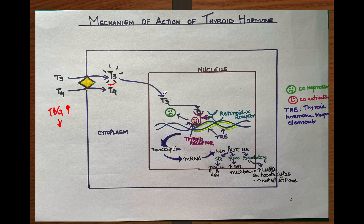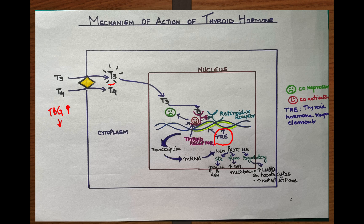T3 goes into the nucleus, and the receptor for T3 — the thyroid receptor — is present in the nucleus itself. This receptor is present on special areas of the gene called the TRE, which stands for thyroid hormone response element. When the receptor is in its inactive form, it is usually bound to corepressors, which are responsible for keeping gene transcription in check when there is no agonist — which is T3 in this case.